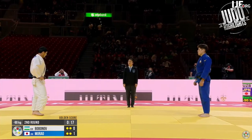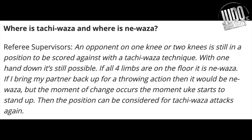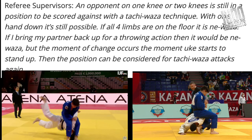Let's look at a few rules in Judo. I couldn't actually find the official rules in the IJF documentation, but apparently standing submissions and flying armbars are not allowed. Standing submissions are not allowed in Judo. So when is it Tachiwaza and when is it Newaza? The rules say an opponent on one knee or two knees is still in a position to be scored against with a Tachiwaza technique. With one hand down, it's still possible. If all four limbs are on the floor, it is Newaza.